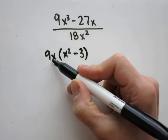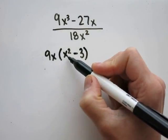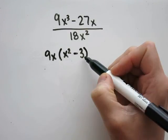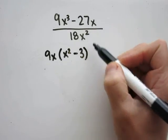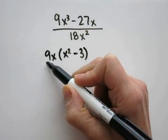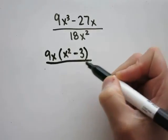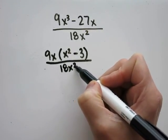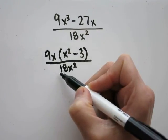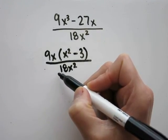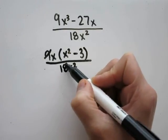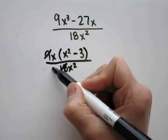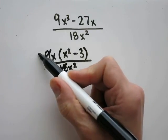Distribute to double-check: 9x times x squared will become 9x cubed. 9 times 3 is 27, keep the x, giving 27x. The denominator is 18x squared. Now I have 9 and 18, which are both divisible by 9. 18 divided by 9 is 2, and 9 divided by 9 is 1.